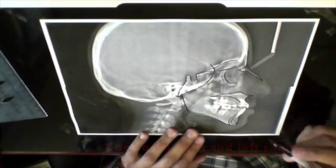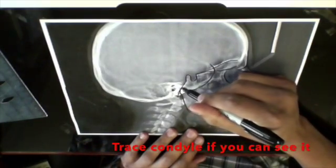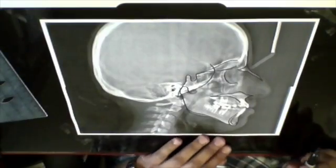Trace the ramus outlines ending at the cranial base. If the condyle is visible, trace it as well.